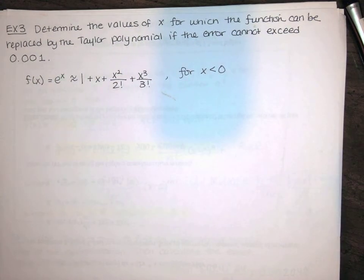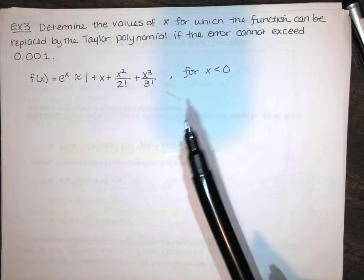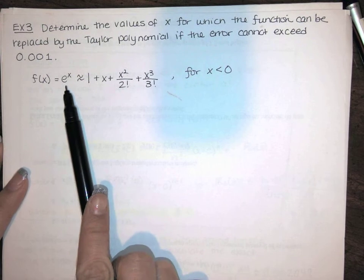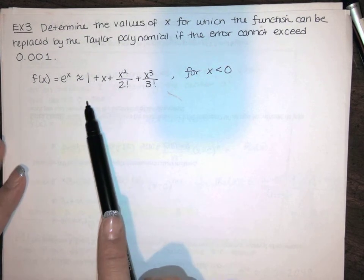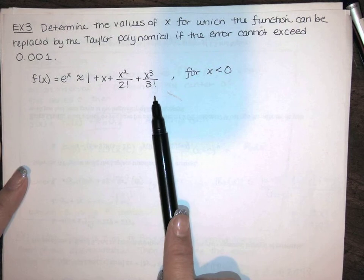In this video, we're looking at one last type of error problem. We're given e to the x, and we're told to approximate e to the x using its third degree Maclaurin polynomial.